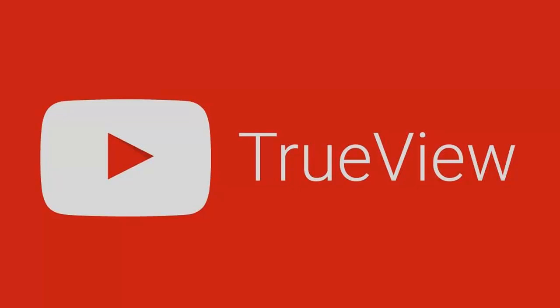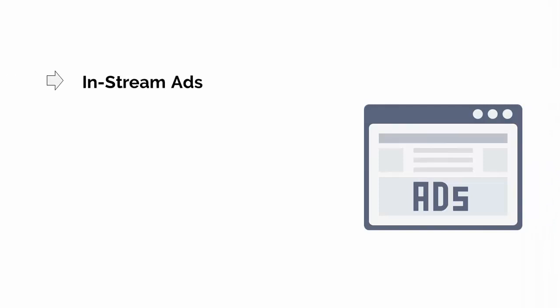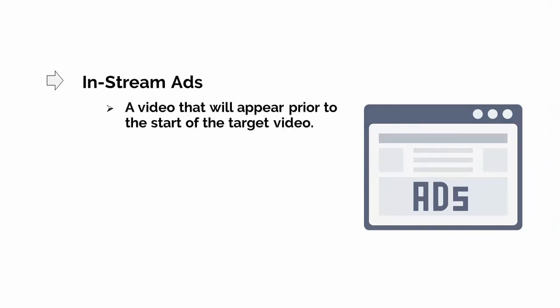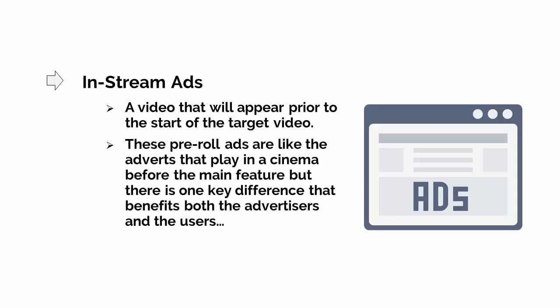Choose this wisely, as the type of video ad that you choose is also going to impact on the options available for you in terms of your destinations and the cost. An in-stream advert, for instance, is a video that will appear prior to the start of the target video. These pre-roll ads are like the adverts that play in a cinema before the main feature, but there is one key difference that benefits both the advertisers and the users, which is that the videos are skippable.